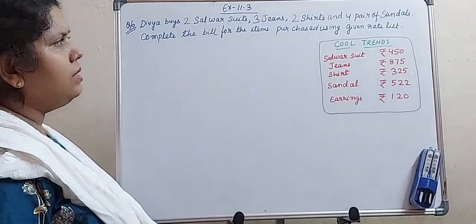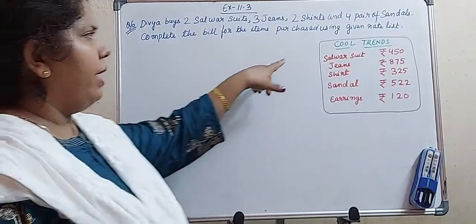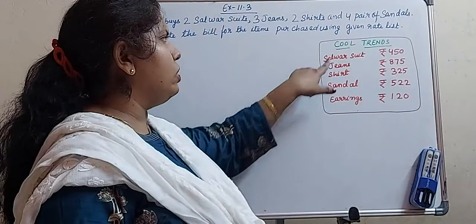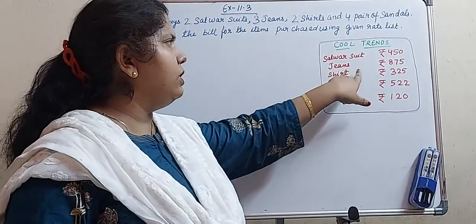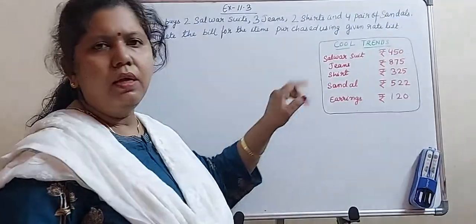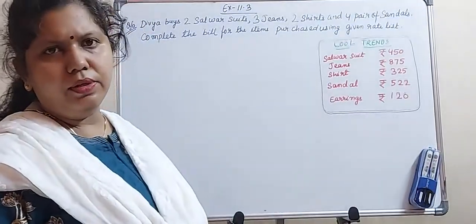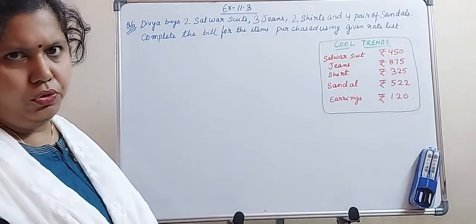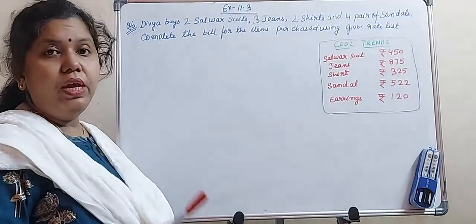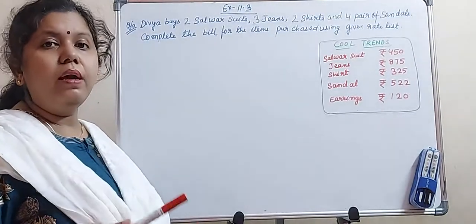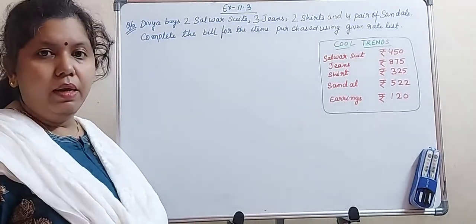This is your rate list: cost of 1 salwar suit, cost of jeans, cost of shirt, cost of sandal, and cost of earrings is provided in the question. So we have to make a bill.